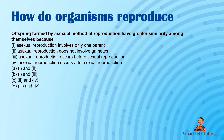Offspring formed by asexual method of reproduction have greater similarity among themselves because: asexual reproduction involves only one parent, and asexual reproduction does not involve gametes — there are no male and female sex gametes, just one mother cell dividing into two daughter cells. Options 3 and 4 are ruled out, so the answer is the first two reasons.